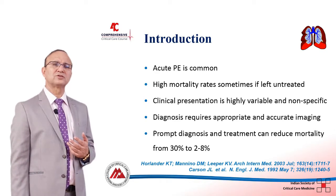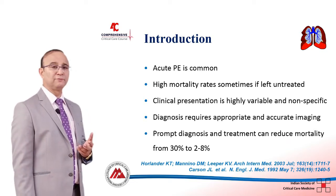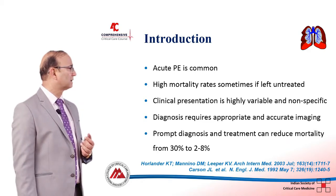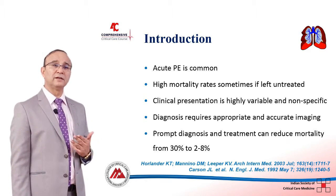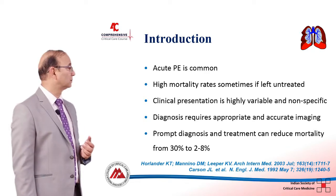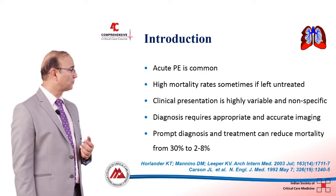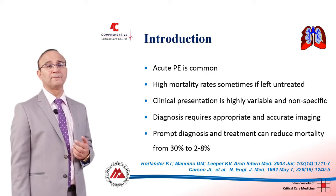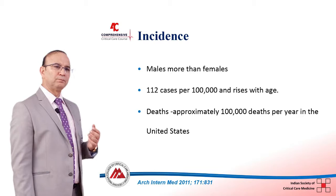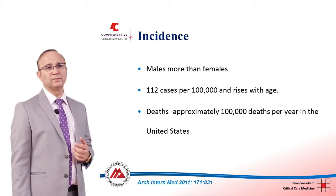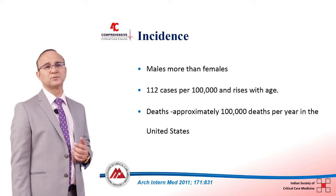Acute pulmonary embolism is an extremely common condition with a high mortality rate if not treated appropriately. Clinical presentation is highly variable and non-specific, ranging from mild symptoms to fatal outcomes. Diagnosis requires appropriate and accurate imaging. Prompt diagnosis and treatment can reduce mortality from 30% to 2.8%. Pulmonary embolism is more common in males, with an overall incidence of about 112 cases per 1 lakh, rising with age.